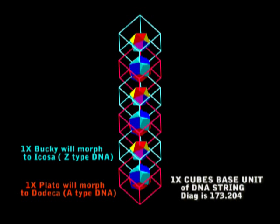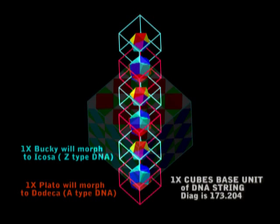I show a diagonal of one of them cubes as 173 pico. This is an important measurement I use a lot for moving dodecas around.